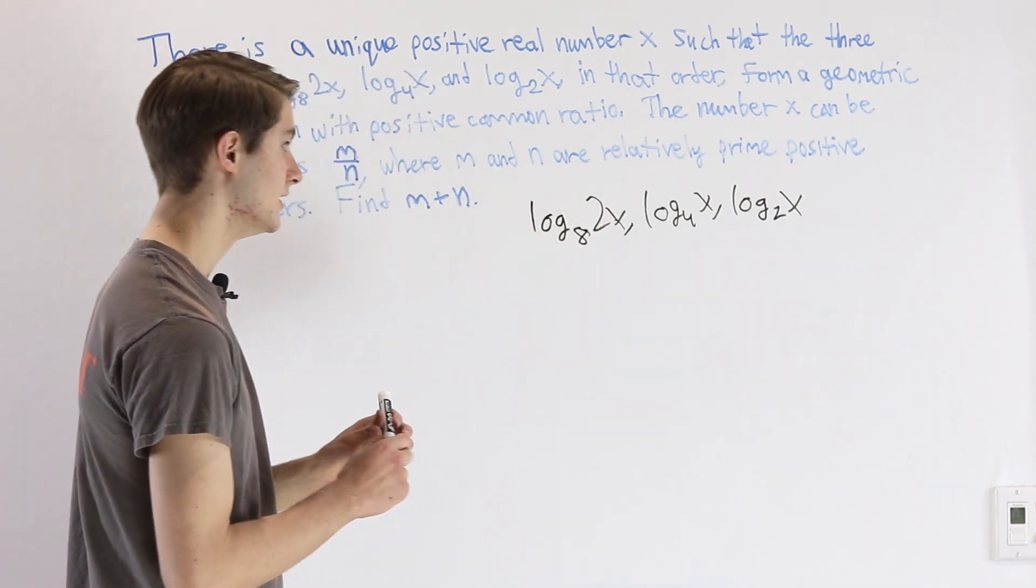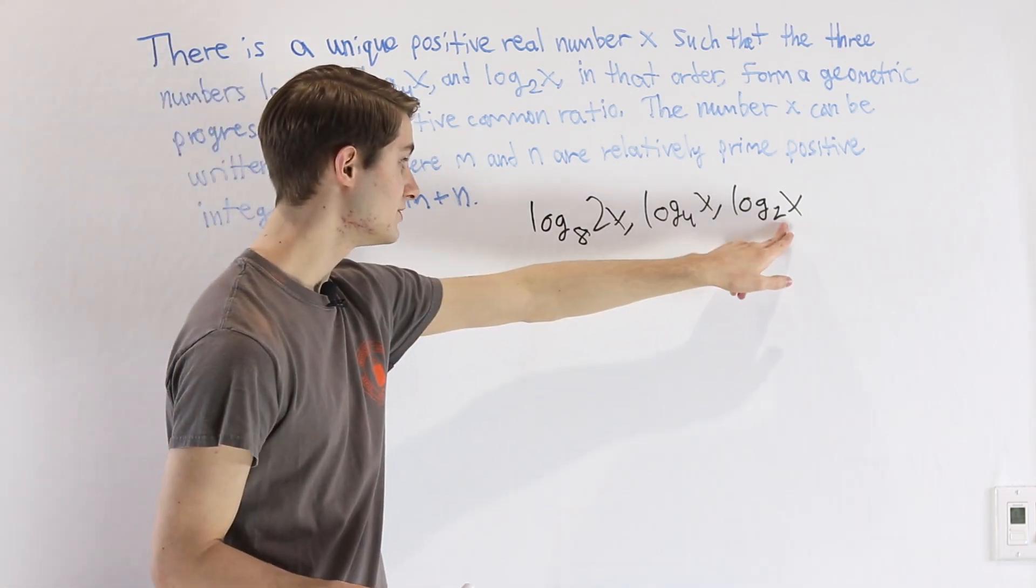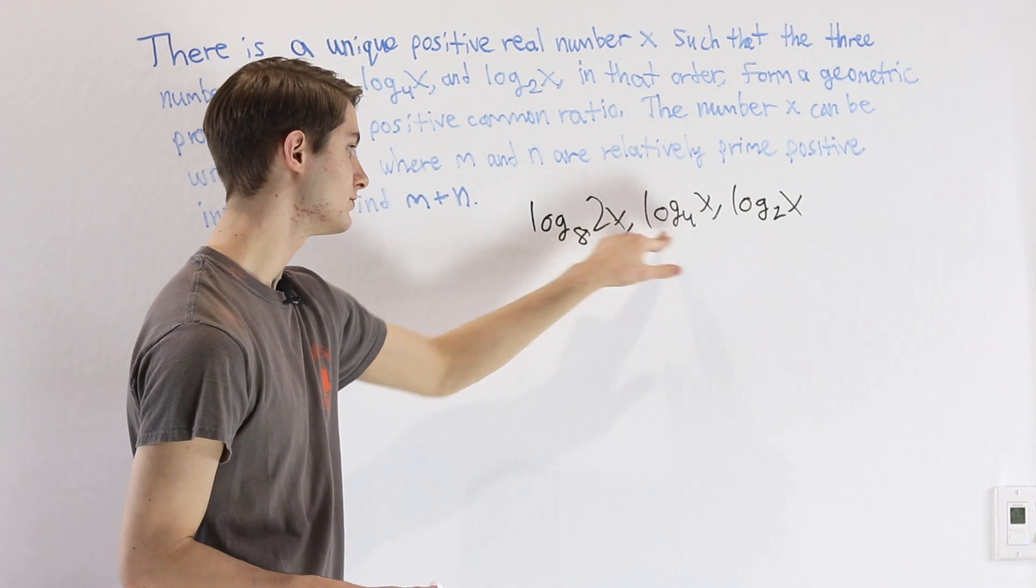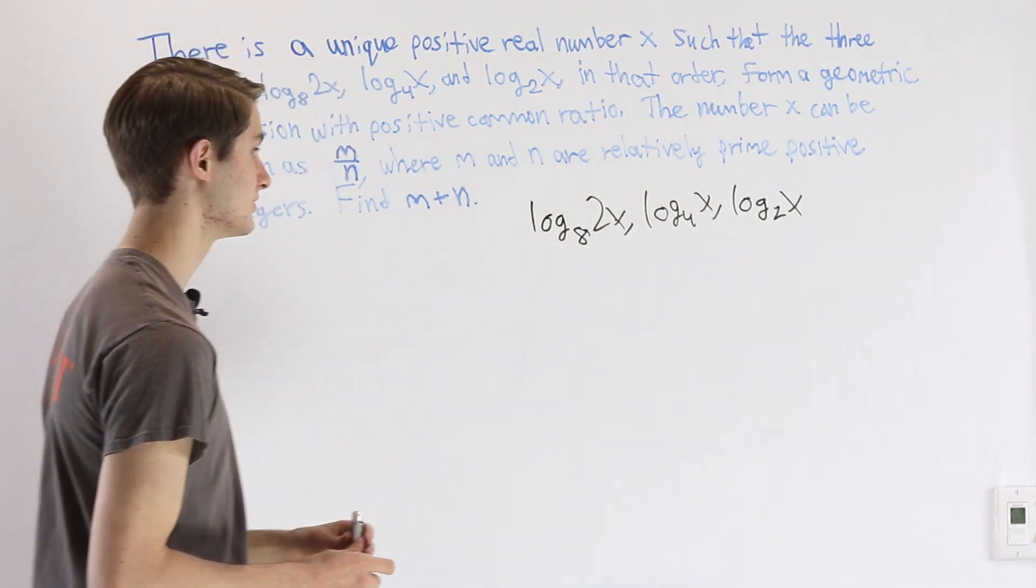So the first thing we want to do is get everything into the same base. And since all of the bases here are powers of 2, 2, 4, and 8, we can try log base 2 to make everything simpler.